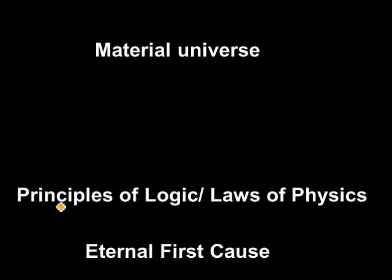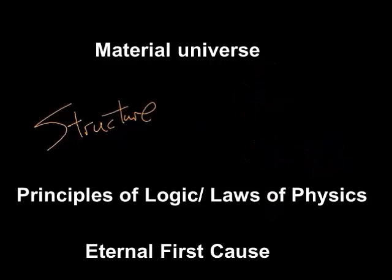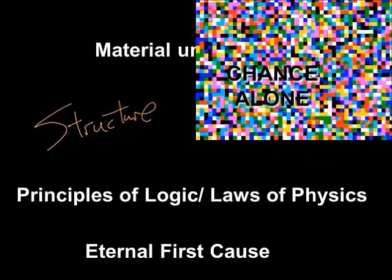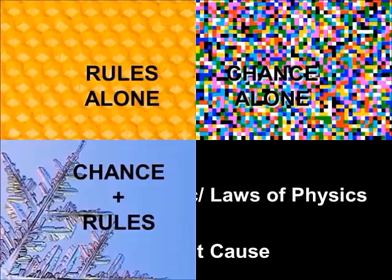Let's consider just two other observable features of the material universe. These are its structure and its fine-tuning. Let's look at the structure of the universe first. Our experience with physical laws and logic give us four possible causes for structure: chance alone, rules alone, a combination of chance and rules, and mind.